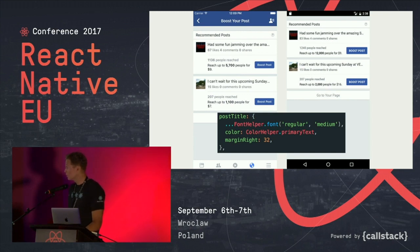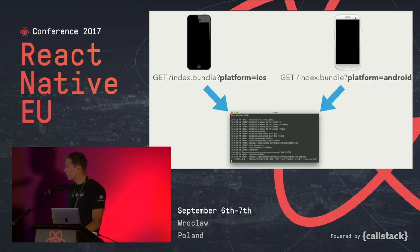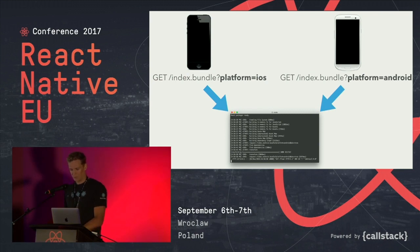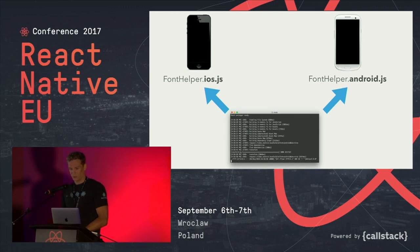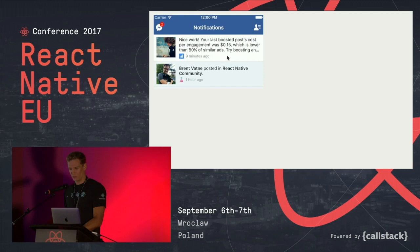How is platform-specific styling achieved with the same JavaScript code? There are constants — a font helper or color helper — that give you standard colors and fonts used across the whole Facebook codebase. You just use the constant and it gives you the right value on Android and iOS. The React Native packager builds either the iOS bundle or the Android bundle and returns the appropriate platform-specific code.